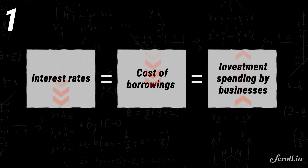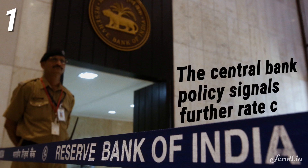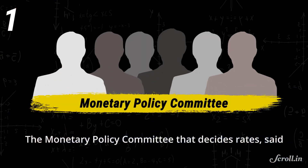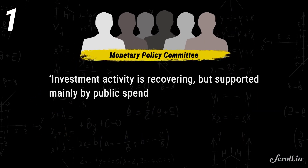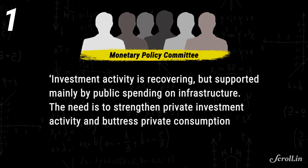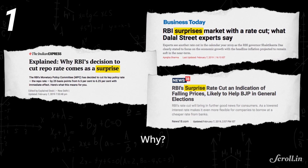The central bank's policy also signals further rate cuts. The Monetary Policy Committee, which decides rates, said investment activity is recovering but is supported mainly by public spending on infrastructure. The need is to strengthen private investment activity and buttress private consumption. But the move to reduce rates has come as a surprise — why?